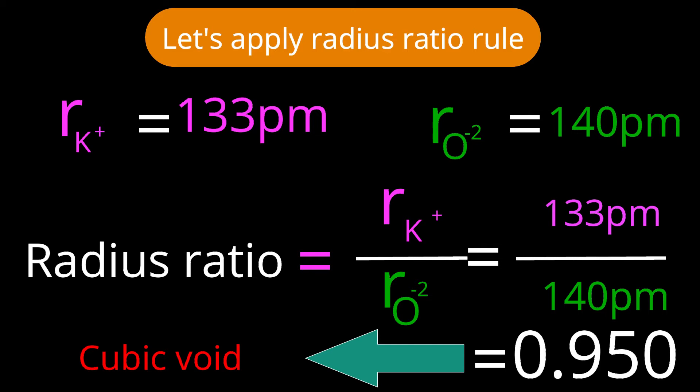So as we were applying till now the ranges for the radius ratio, this 0.950 value is between 0.732 to 1. It means coordination number should be 8 for potassium. Suppose if this would have been the truth, then for 1 potassium in simple cubic arrangement, oxide ions should be there. Number of oxide ions will be 1 total, and number of potassium ions also will be 1. So 1 to 1 should be the stoichiometry, but it is not the real reality.